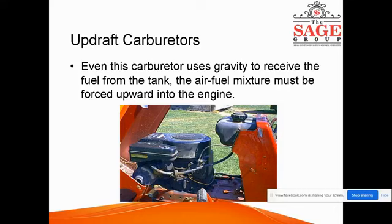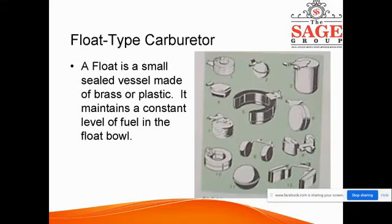Float type carburetors: the float is a small vessel made of steel or plastic that maintains a constant level of fuel in the float bowl. You can see the float bowl here — it is fixed within the casing.